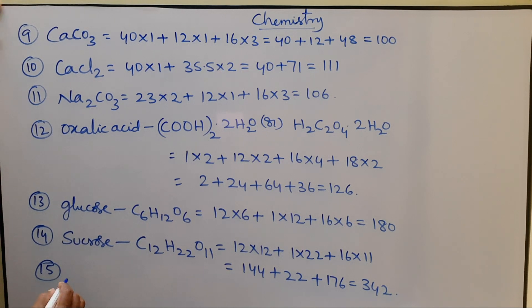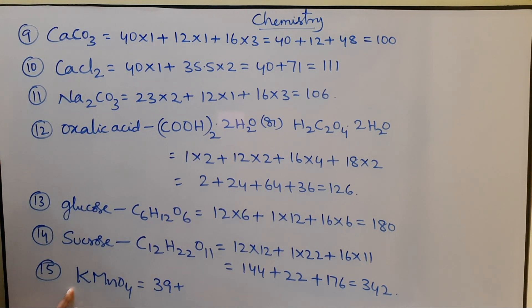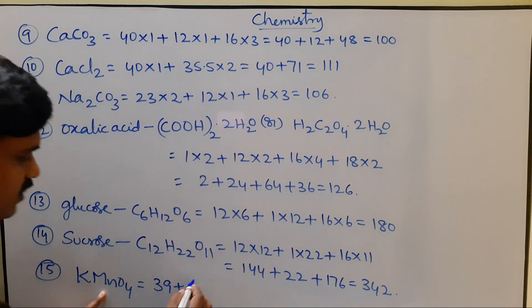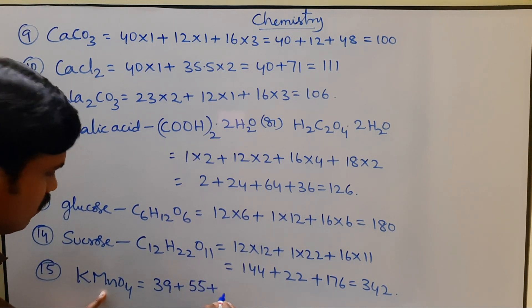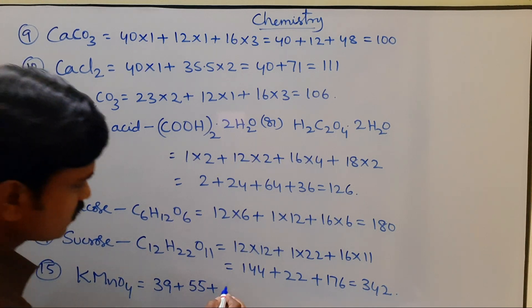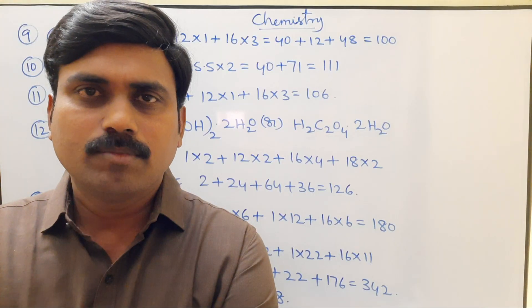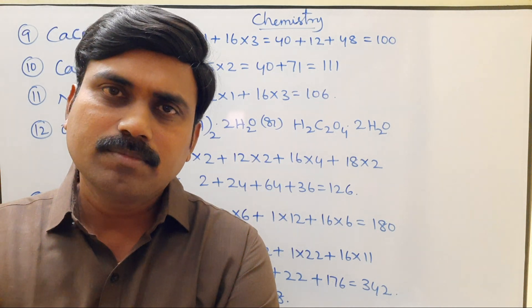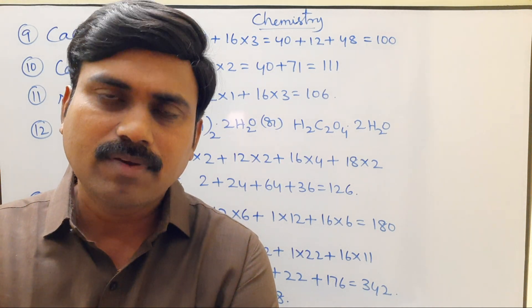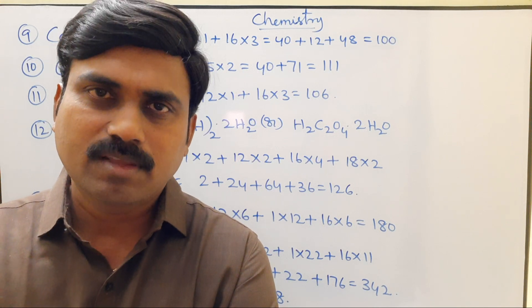Now find the molecular weight of KMnO4. Potassium atomic weight 39, plus Manganese atomic weight 55, plus Oxygen atomic weight 16 × 4 equals 64. Total is 158. Next, find the molecular weight of Potassium Dichromate, chemical formula K2Cr2O7 — please put your answer in the message box.